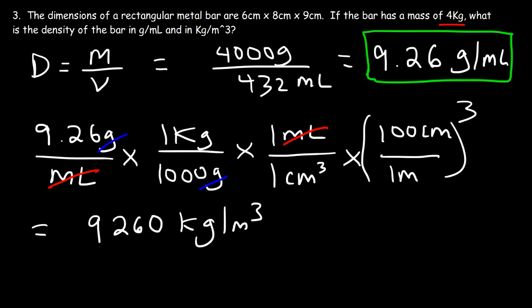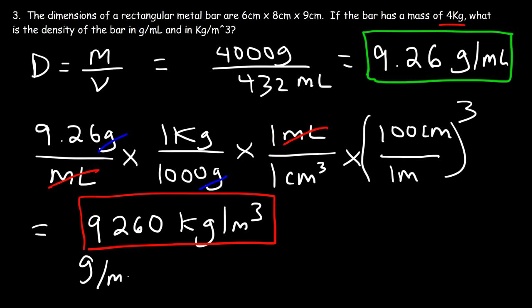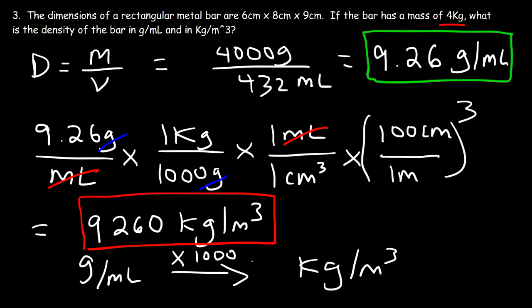When dealing with density, this is a common conversion you'll see. If you want to quickly go from grams per milliliter to kilograms per cubic meter, all you need to do is multiply by 1,000 for a quick answer. Or you can follow the steps we just performed here in this video. That's it for this problem.